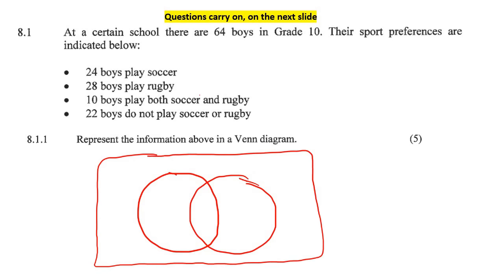Right, now there are 64 people in total, okay? So I'm going to put a 64 over here. Now we've got rugby and soccer. It says that 22 boys do not play soccer or rugby. So there are 22 boys on the outside here who do not play any of those sports.